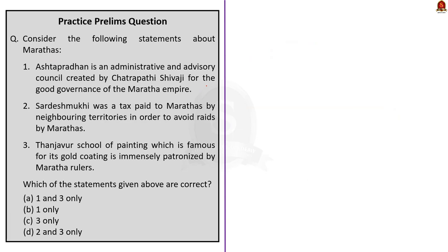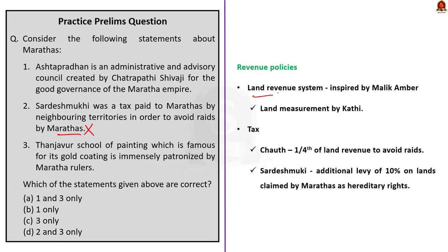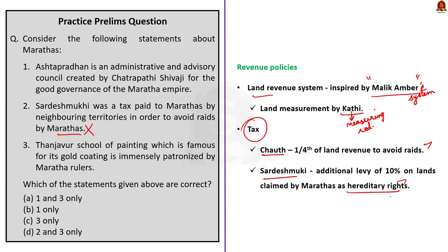Coming to the second statement: 'Sardeshmukhi was a tax paid to Marathas by neighboring countries in order to avoid raids by Marathas' — this statement is incorrect. Revenue policies of Maratha majorly included land revenue. Chauth was one-fourth of land revenue paid to the Marathas to avoid Maratha raids, whereas Sardeshmukhi was an additional levy of 10% on lands over which the Marathas claimed hereditary rights. So the tax described in the second statement is Chauth, not Sardeshmukhi. Therefore, the second statement is incorrect.